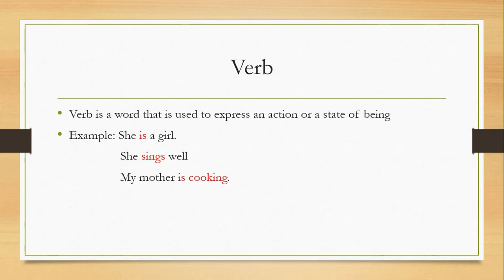Then comes verb. Verb is a word that is used to express an action or a state of being. We can say verb is an action word. She is a girl. State of being is told here. She thinks well. An action. My mother is working. An action again.